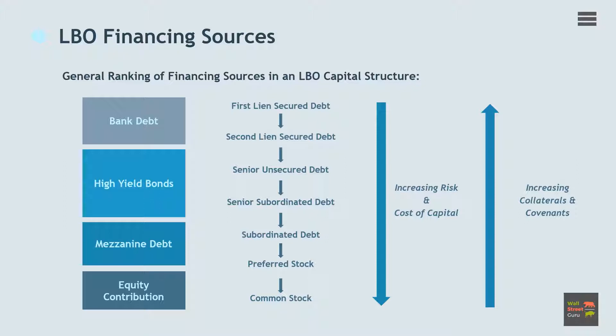As a general rule, the higher a given debt instrument ranks in the capital structure hierarchy, the lower its risk, and consequently the lower its cost of capital to the borrower or issuer. However, cost of capital tends to be inversely related to the flexibility permitted by the applicable debt instrument.